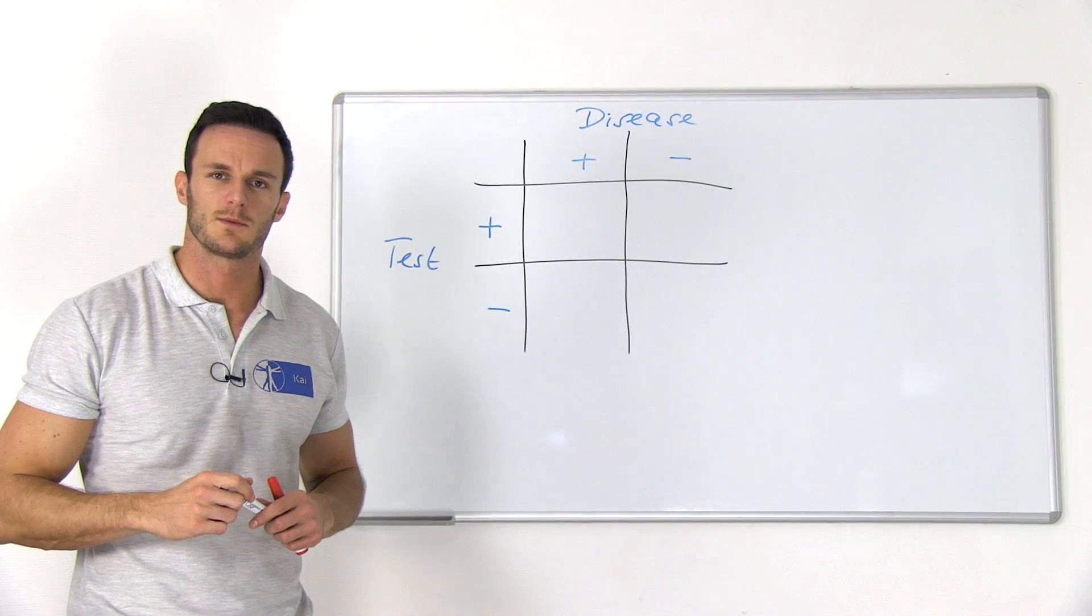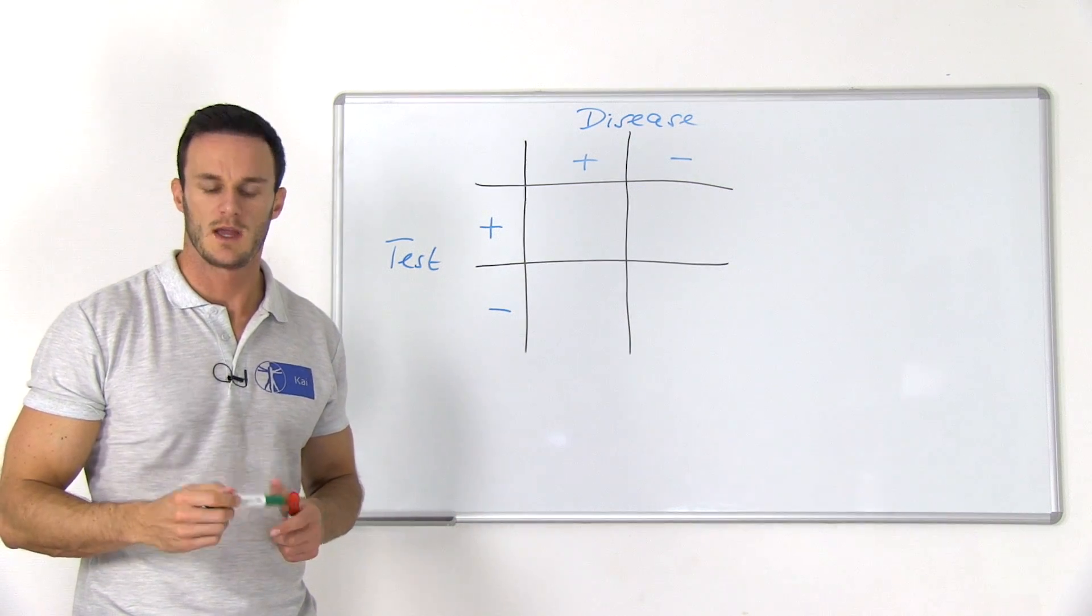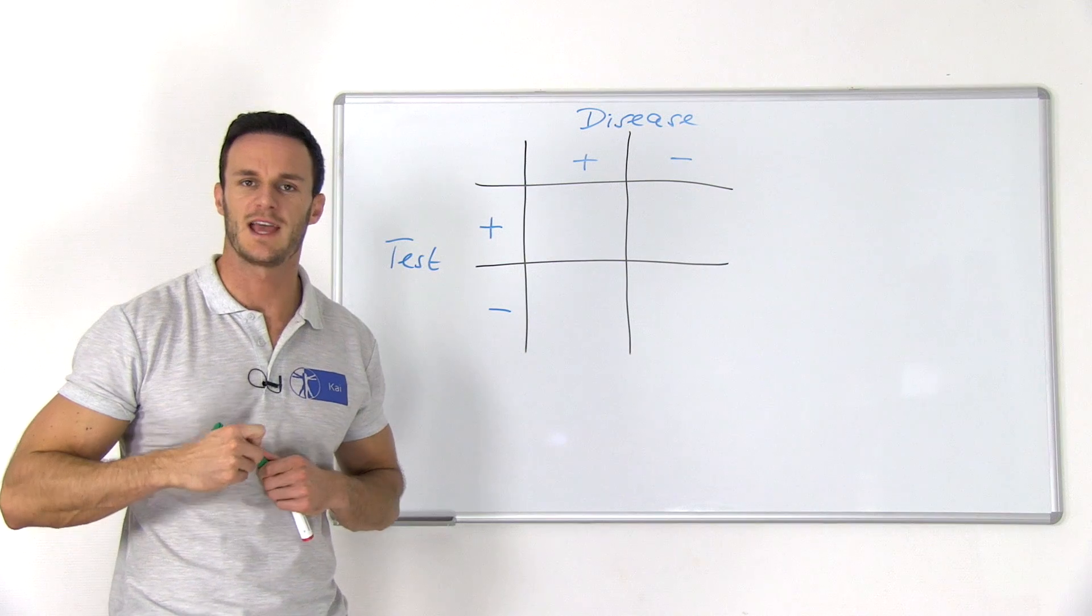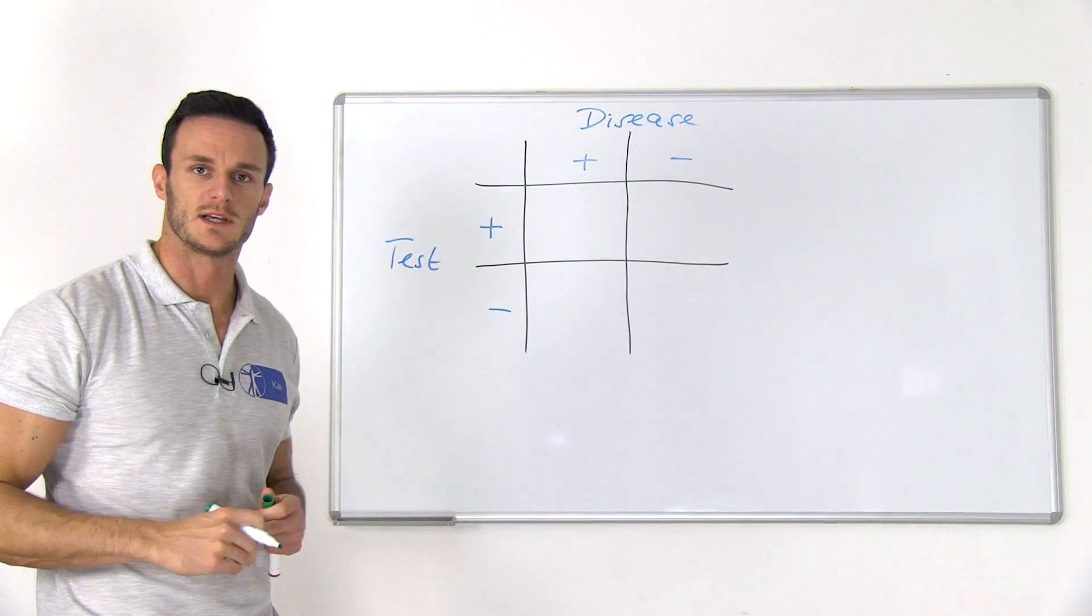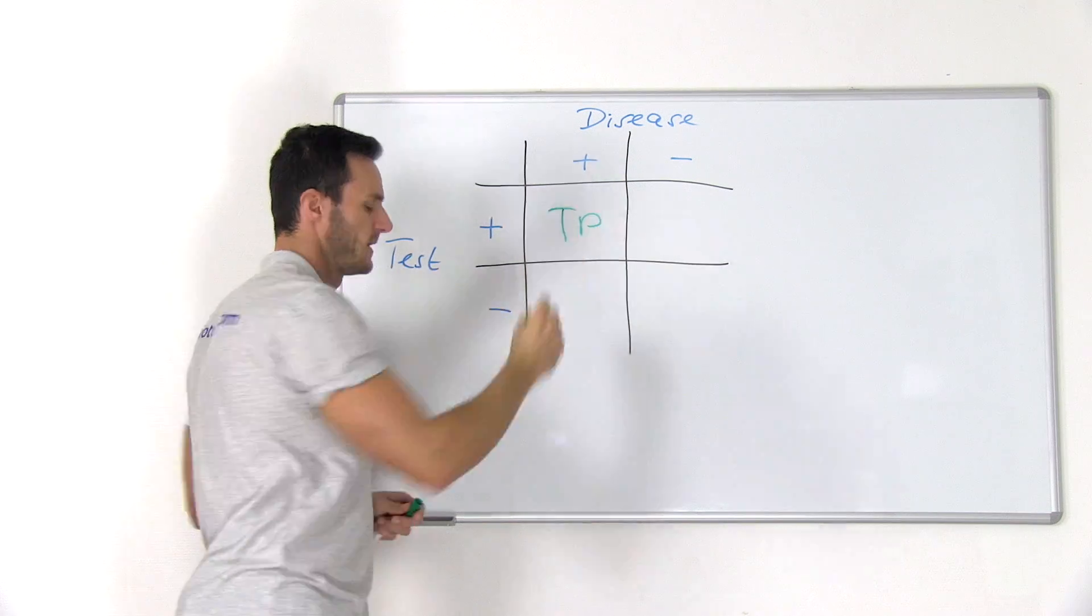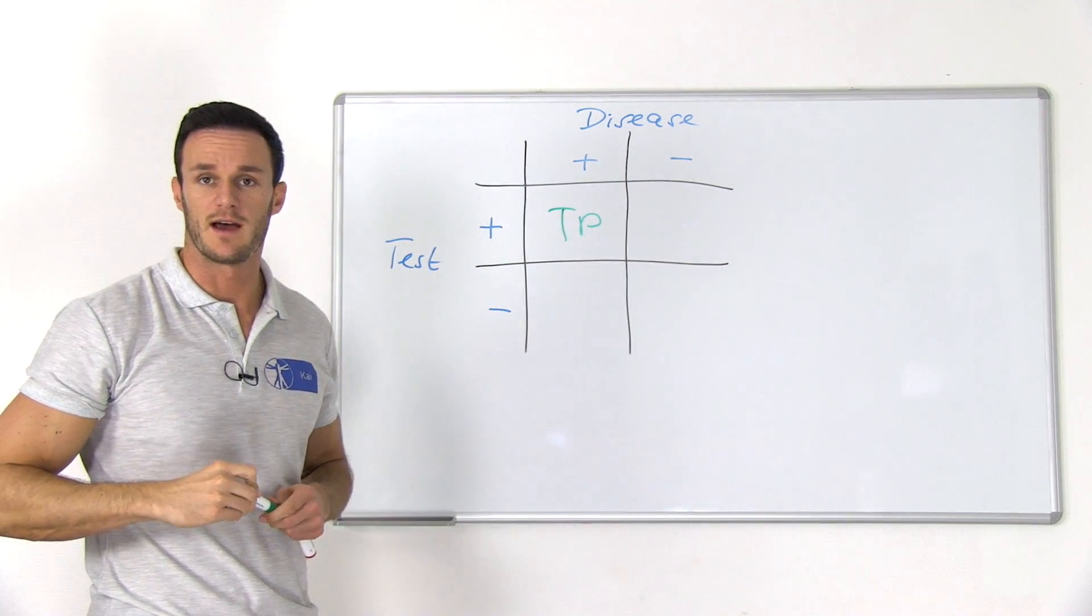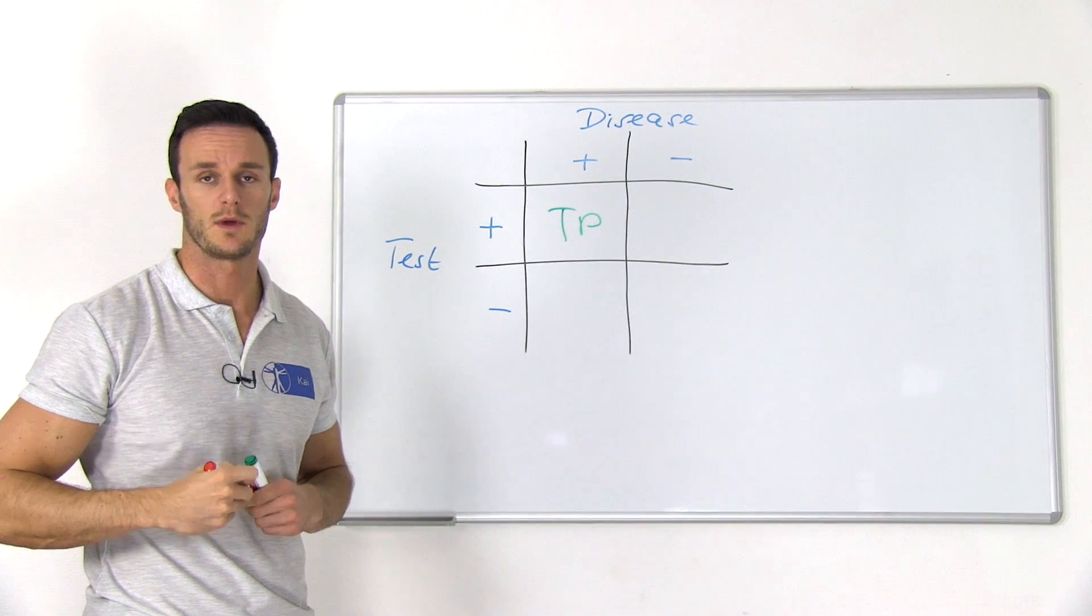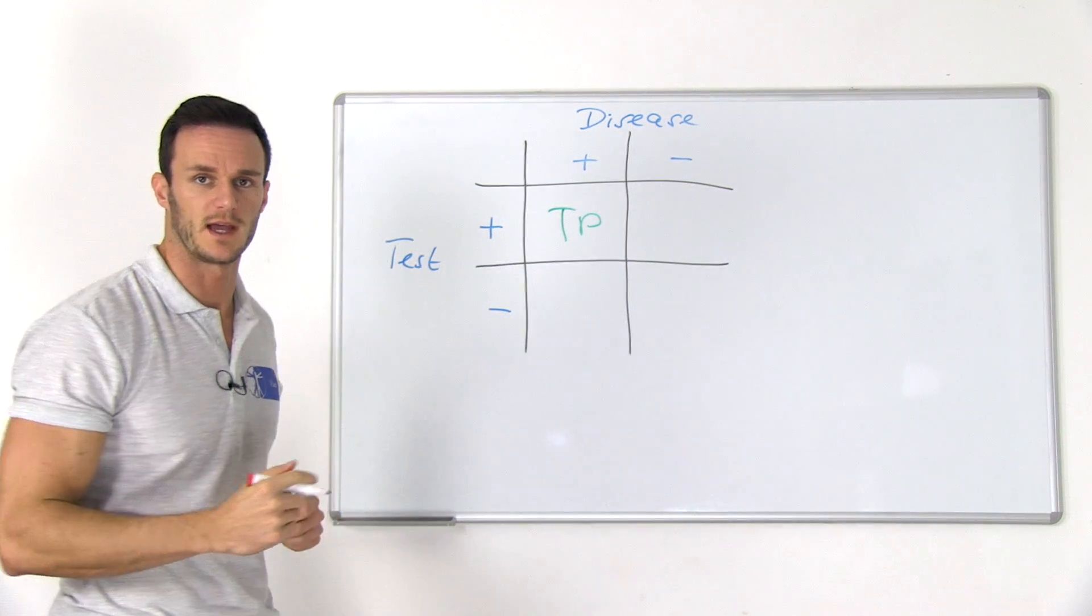This means we can have the following four situations. So the test says positive and the patient actually has the disease. We call this true positive, which we abbreviate with TP. Then we can have a positive test, but the patient does not have the disease. We call that false positive, abbreviated with FP.